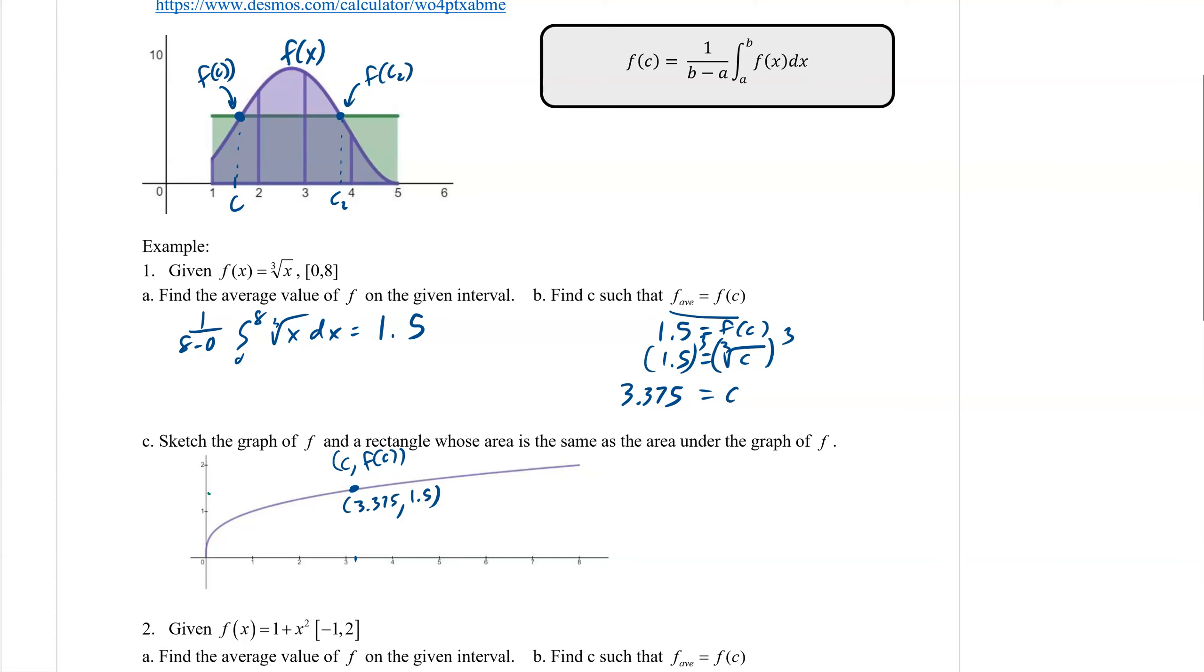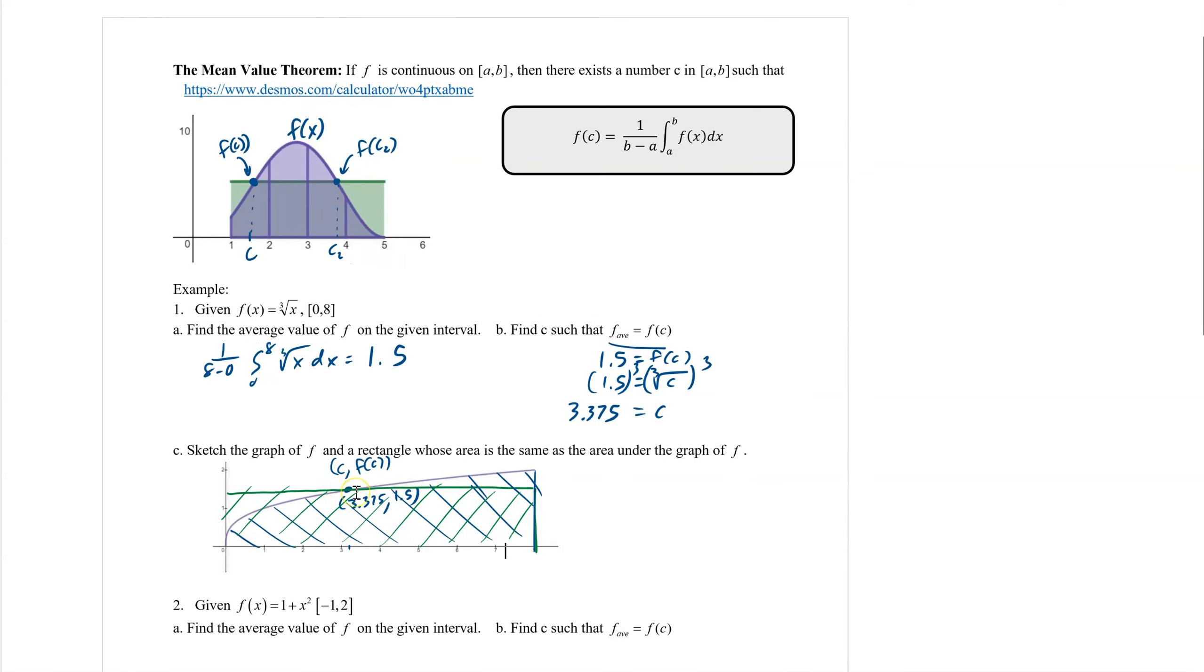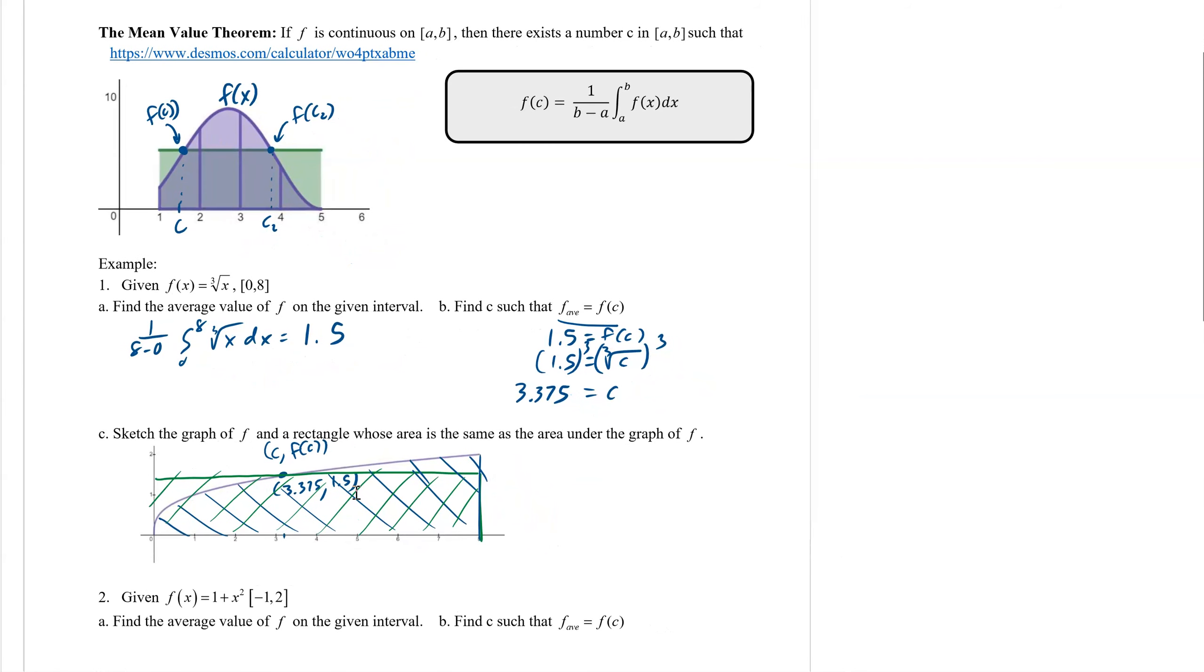Now, if I redistribute everything like this from 0 to 8, then the area in the purple is exactly the same as the area under the green. If you see where they intersect, it's right there. That's all it means by the mean value is that it has to be some value of c that is the average itself.